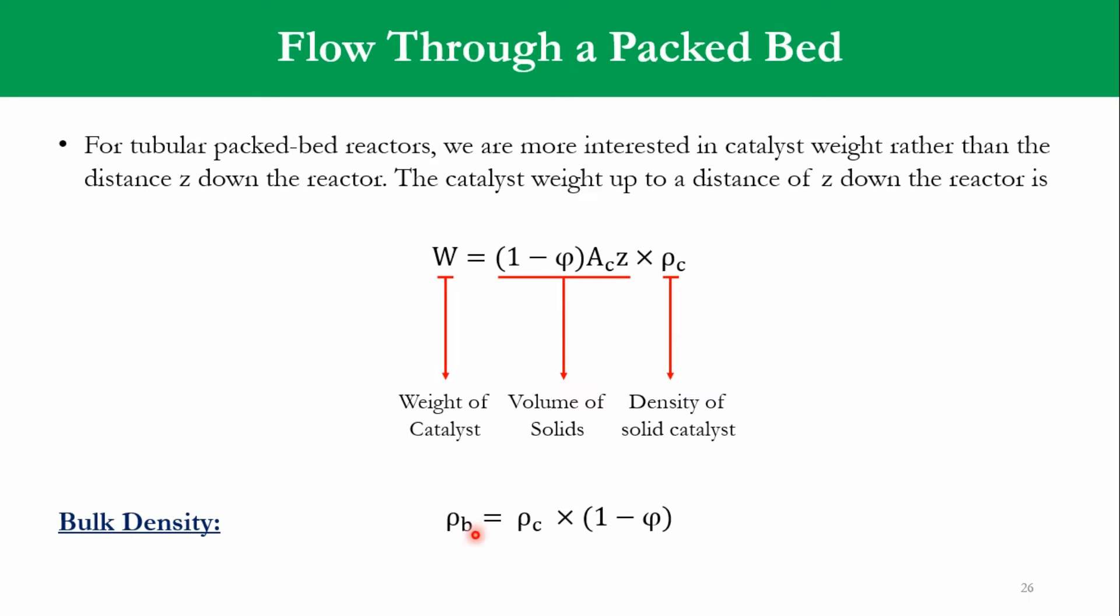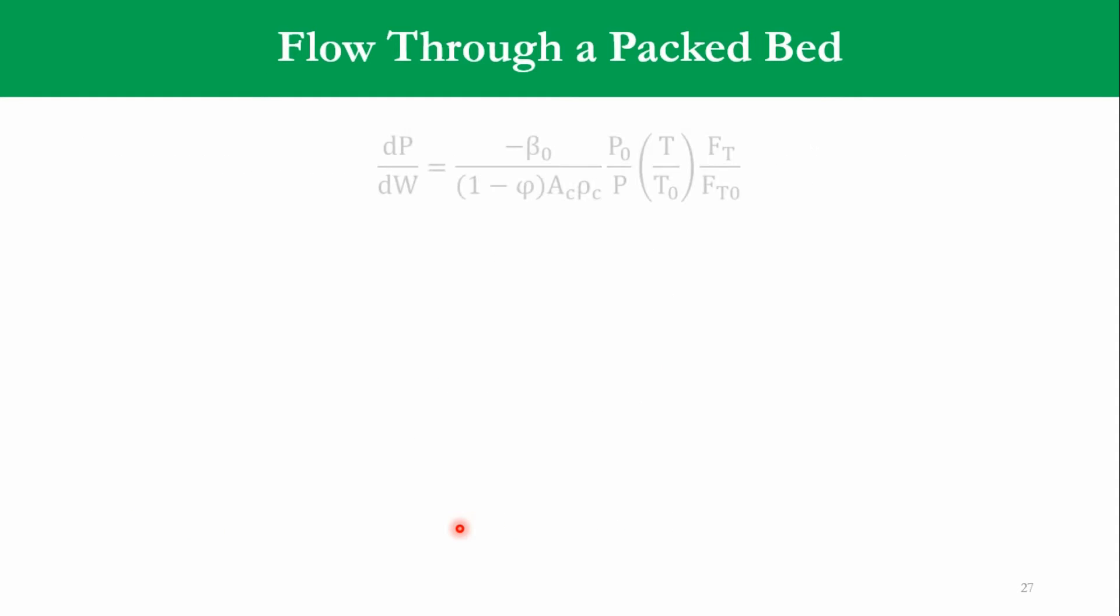Bulk density, which is ρB, is equal to ρc times 1-φ, again the same correlation, that it is the density multiplied by the non-porous area, and that gives the bulk density value. Accordingly, once we go back and substitute the value of Z, we get dP over dW is equal to minus β0 over 1-φ Ac ρc P0 over P times T over T0 times FT over FT0. Obviously, this lecture is a bit derivation type, but once you go through it and solve it on paper, you will be able to grasp these concepts easily.